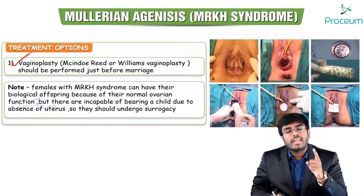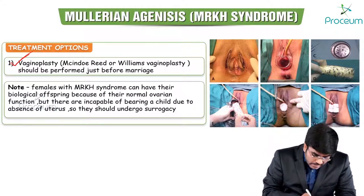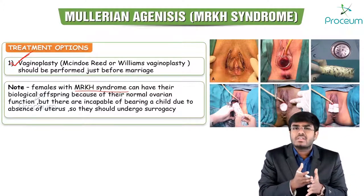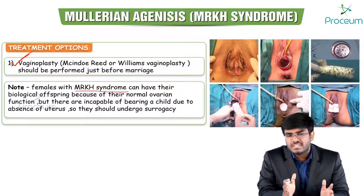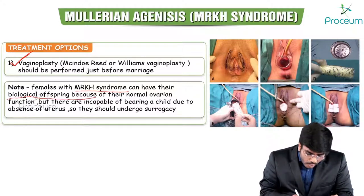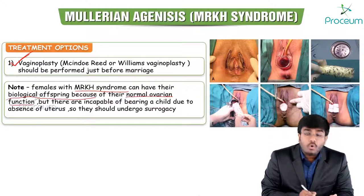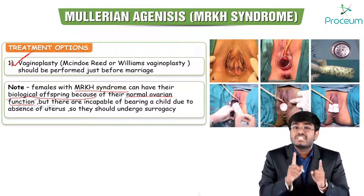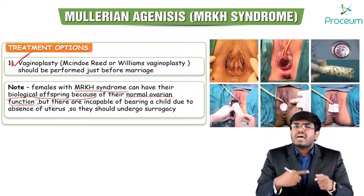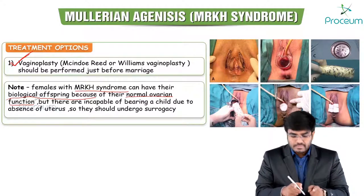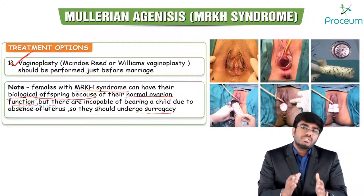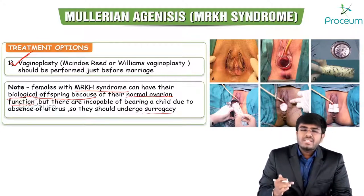Important MCQ: females with MRKH syndrome (Mayer-Rokitansky-Küster-Hauser syndrome), also called Müllerian agenesis, can have biological offspring because of normal ovarian function. Ovaries develop from genital ridges, not Müllerian ducts. They should undergo surrogacy to have a biological offspring.